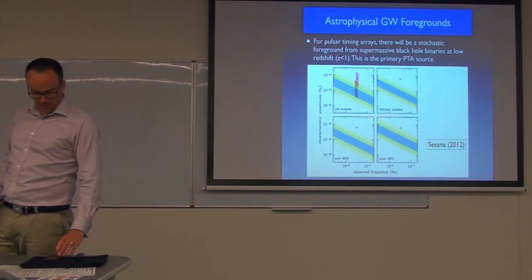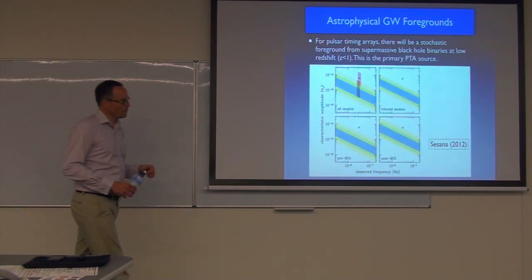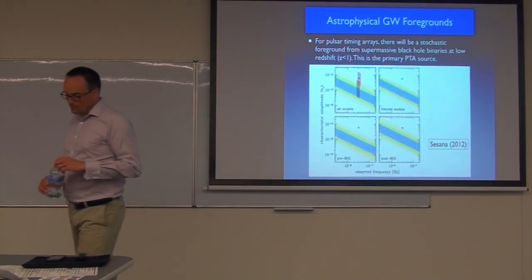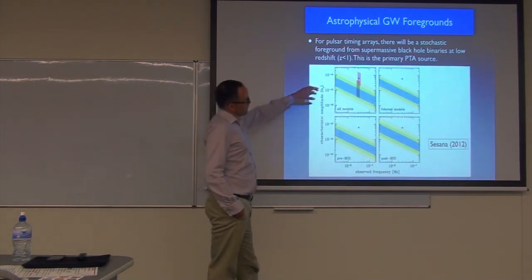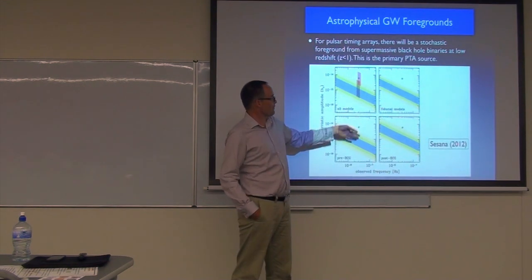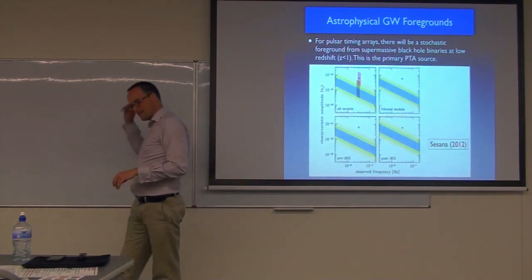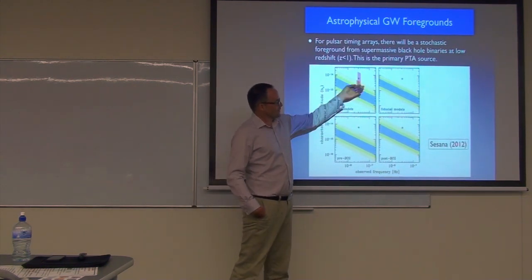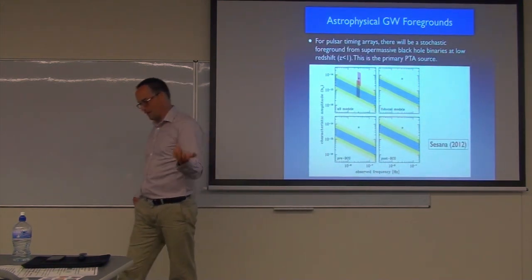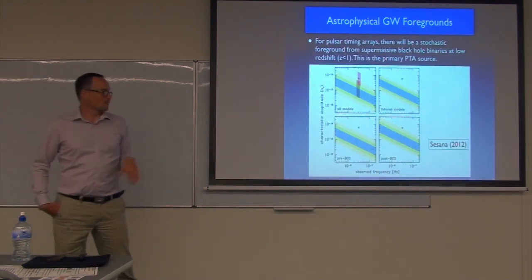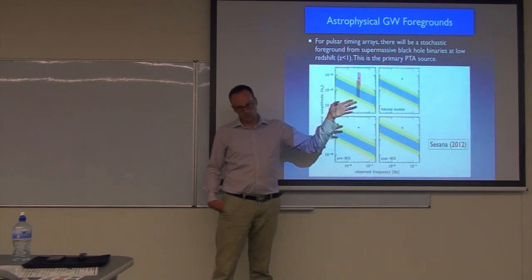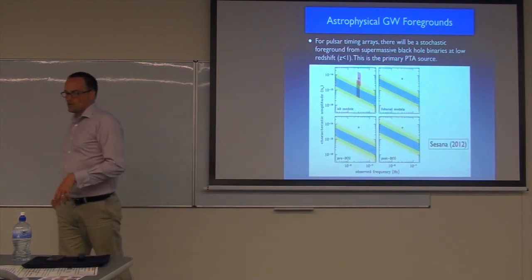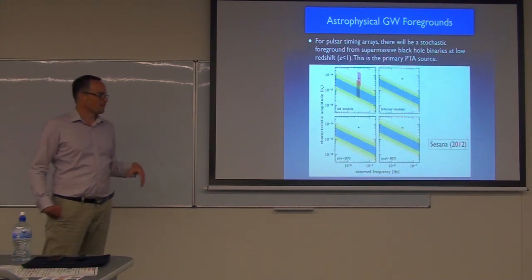In the pulsar timing band, we expect to see a background from supermassive black holes. Various predictions exist, with the amplitude of this background at around 10^-15 at a frequency of one over a year. Current expectation is that for these sorts of models, we should see something with pulsar timing within the next five to ten years.